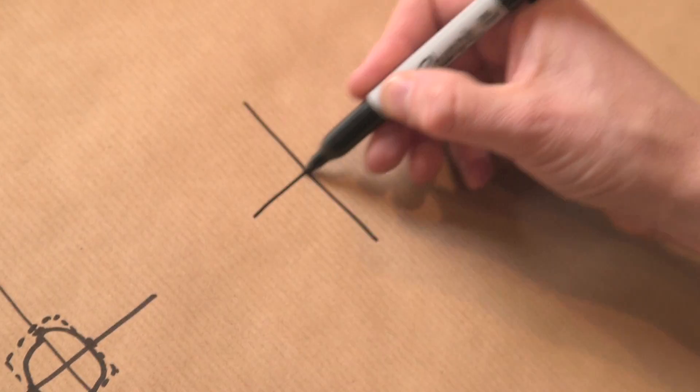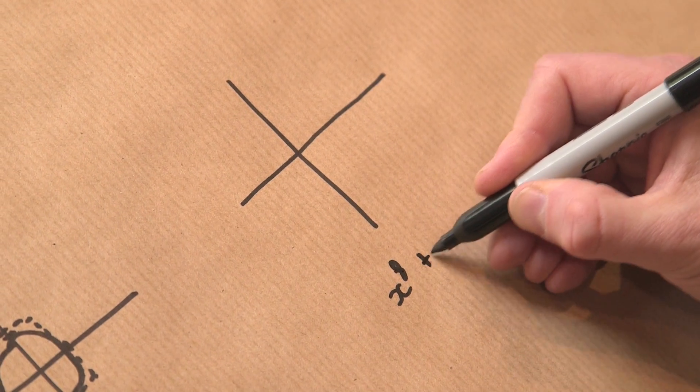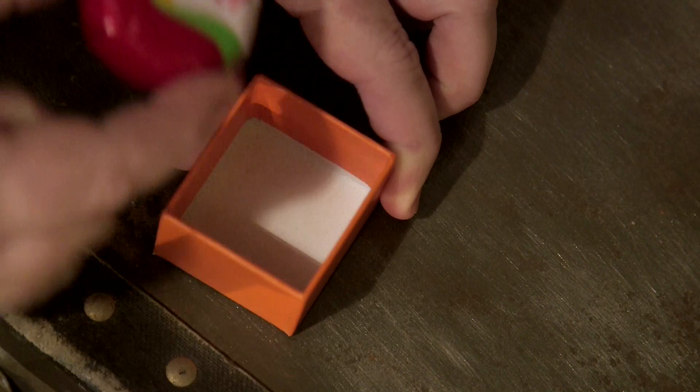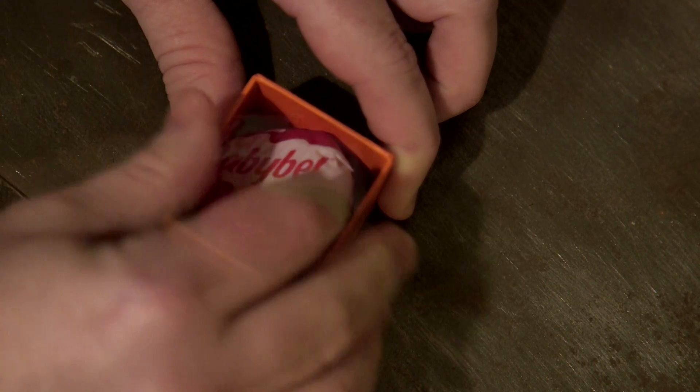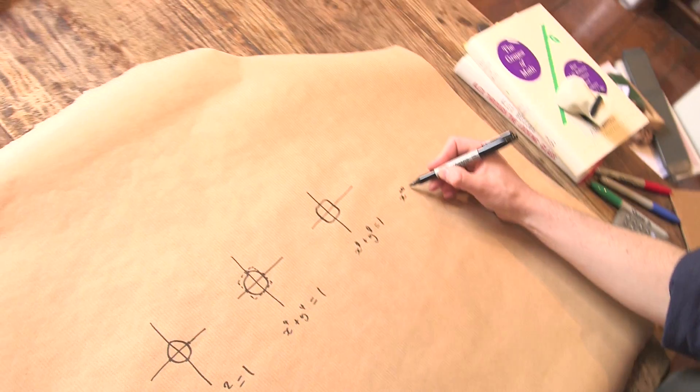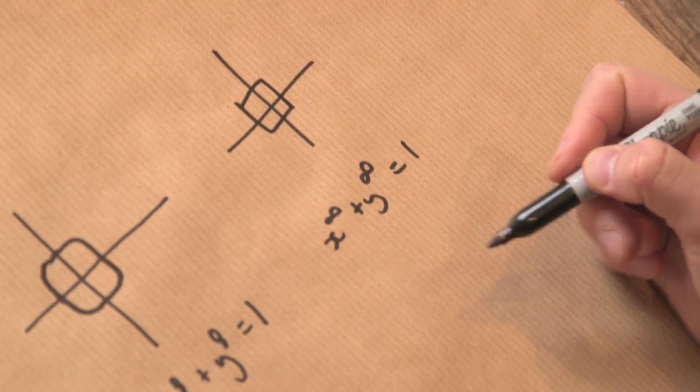And I apologize for my rubbish writing. Let's go to x to the eight plus y to the eight equals one. This looks basically like a baby bell cheese stuck in a box. If we were to go to x to the infinity plus y to the infinity equals one, it would be the square.